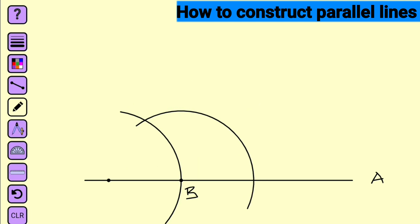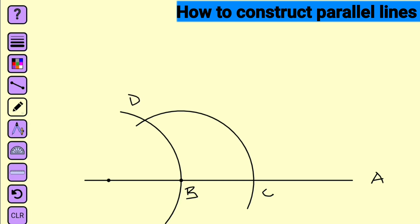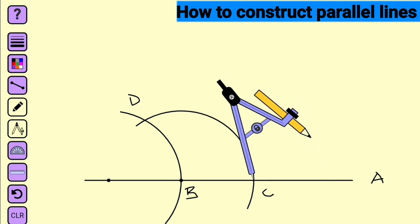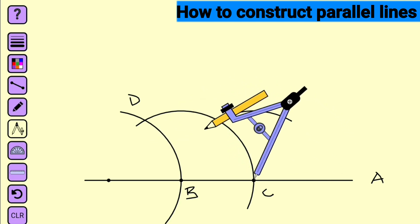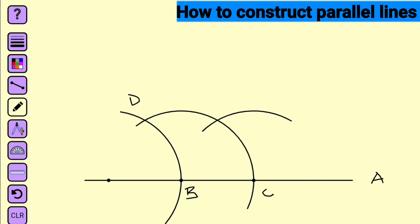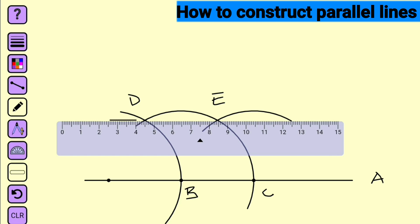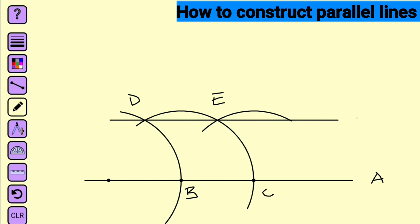Let us name the intersections: we have B, this is C, and this is D. At the same radius, bring your compass to point C and draw an arc to cut this last semi-circle. Let us call that point E. Finally, use your ruler to connect D and E together. Let us call this line F. Hence, line A and line F are said to be parallel to each other.